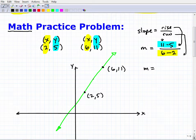Okay, so let's go ahead and finish this up. So m, 11 minus 5 is 6, and then 6 minus 2 is 4. So it can reduce this fraction as 3 over 2. Okay, so that's the answer. Okay, the slope of this line is 3 over 2.